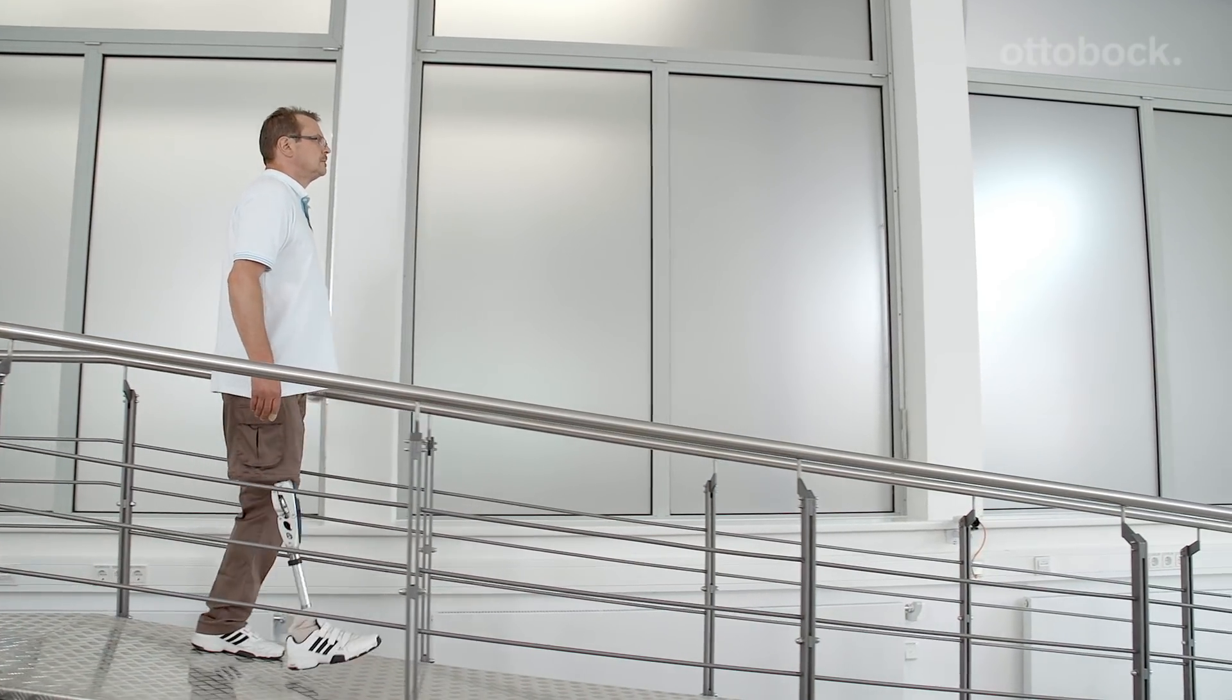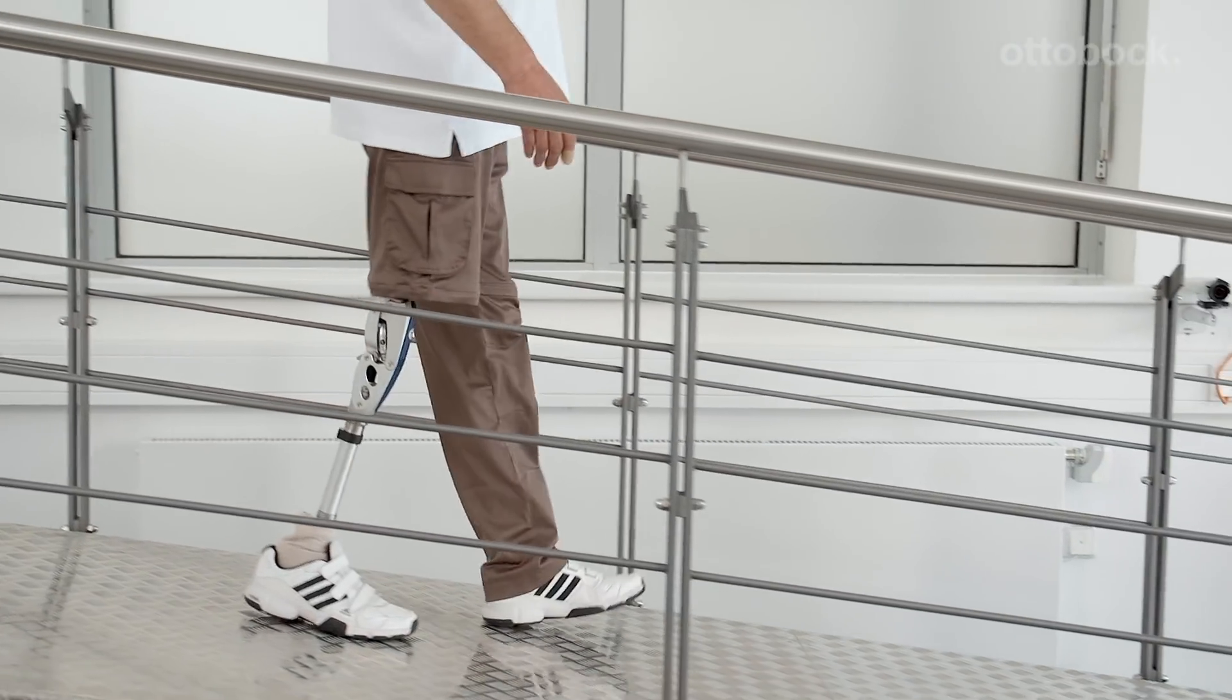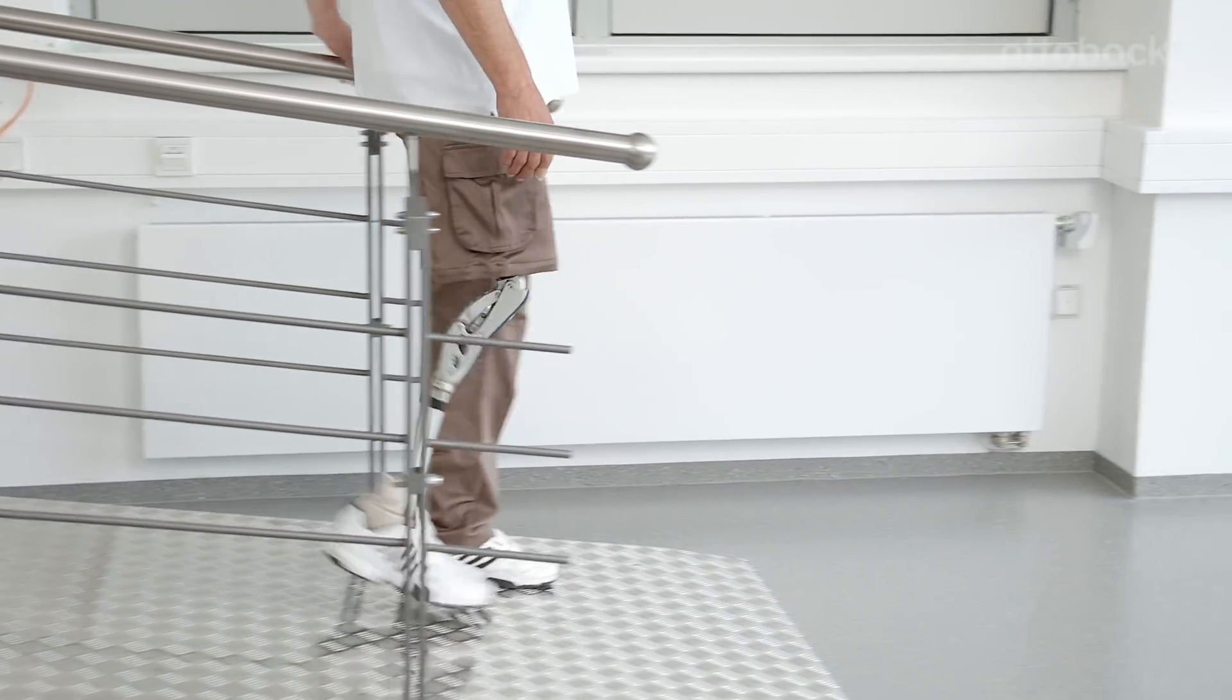Descending shallow slopes is possible with the 3R60 due to the 15 degrees stance phase flexion. In general, the steeper the ramp, the smaller the steps the user has to make.